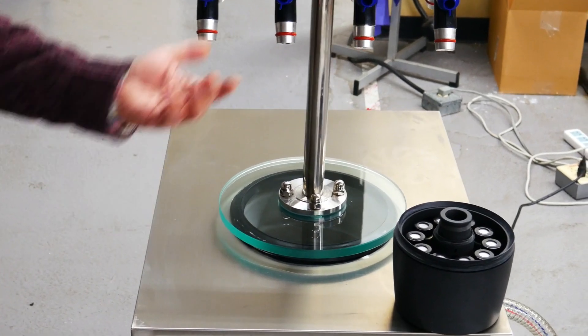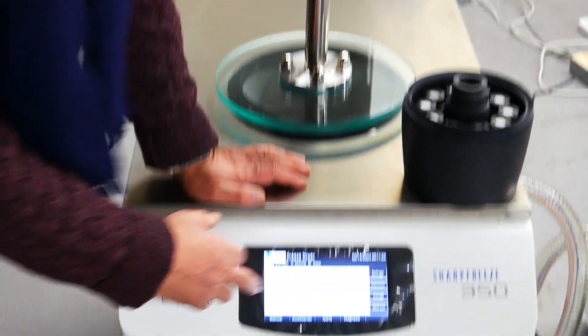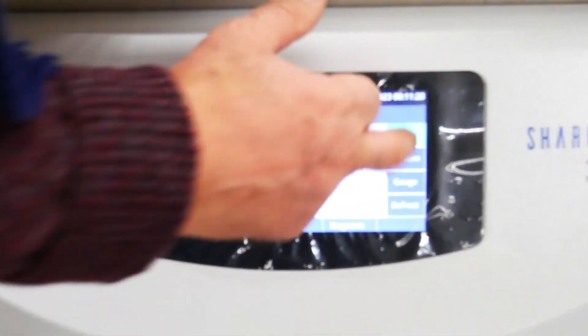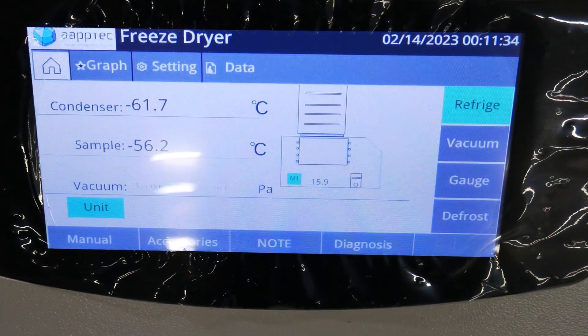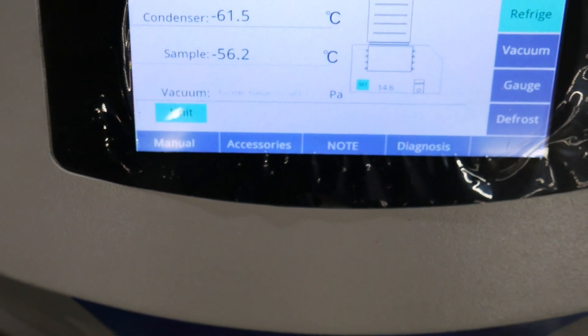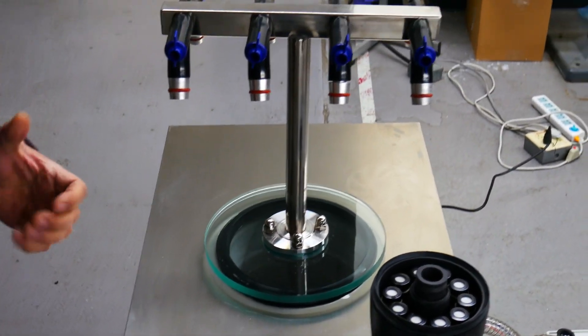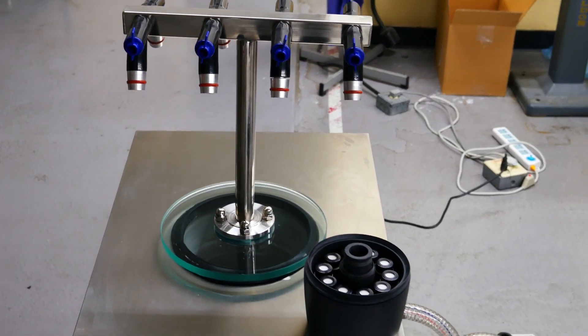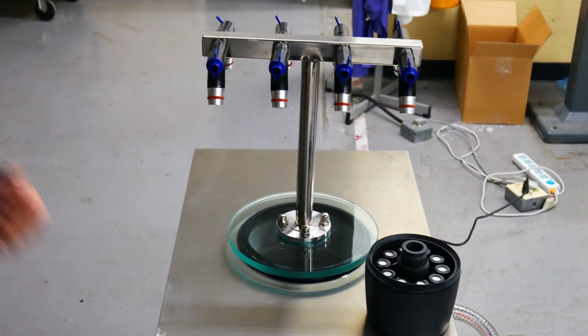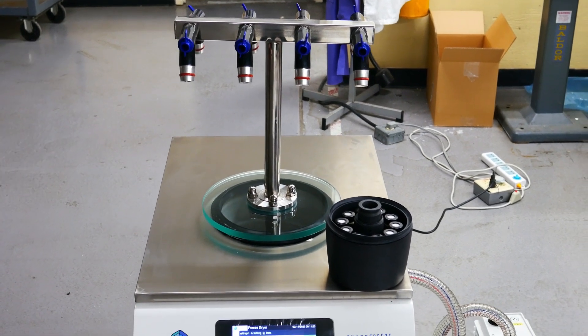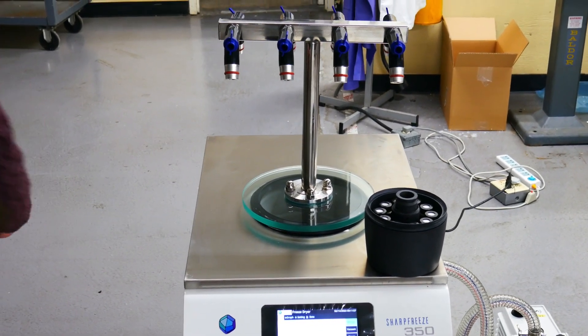Another advantage of the SharpFreeze is that you can freeze your sample inside the chamber. First, you turn the system on and turn on the refrigeration. So now, refrigeration comes on and the temperature goes down to what you set it. Now, you place your sample inside the chamber and you freeze it before you freeze-dry it. So, you do not need dry ice or anything else. You can use the SharpFreeze to do both. Freeze the sample and freeze-dry it.